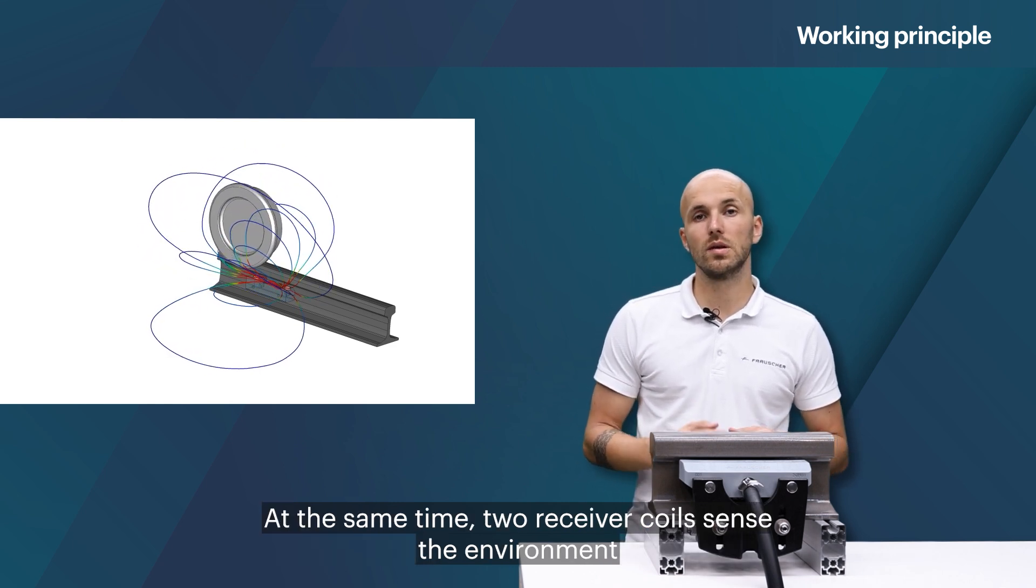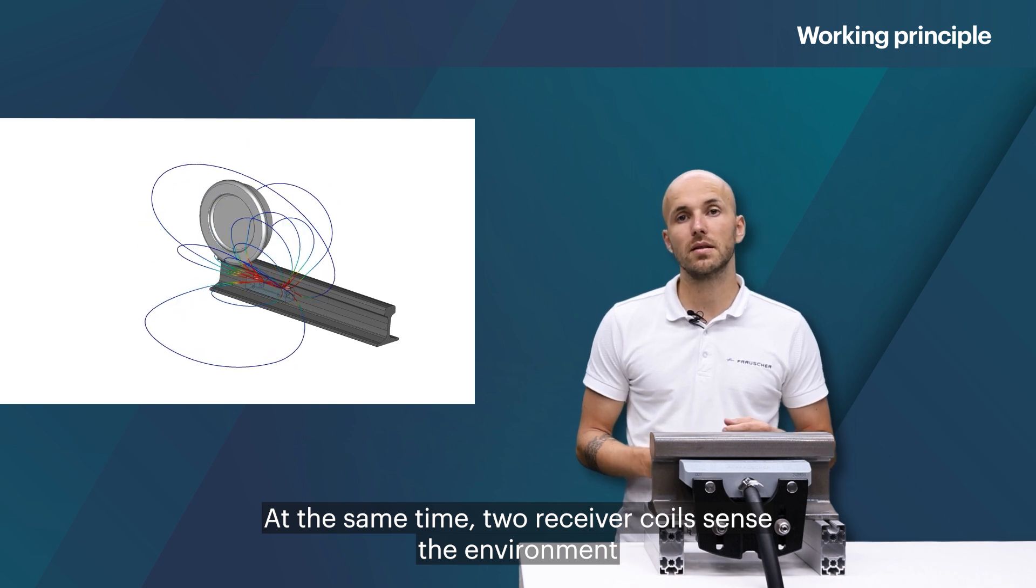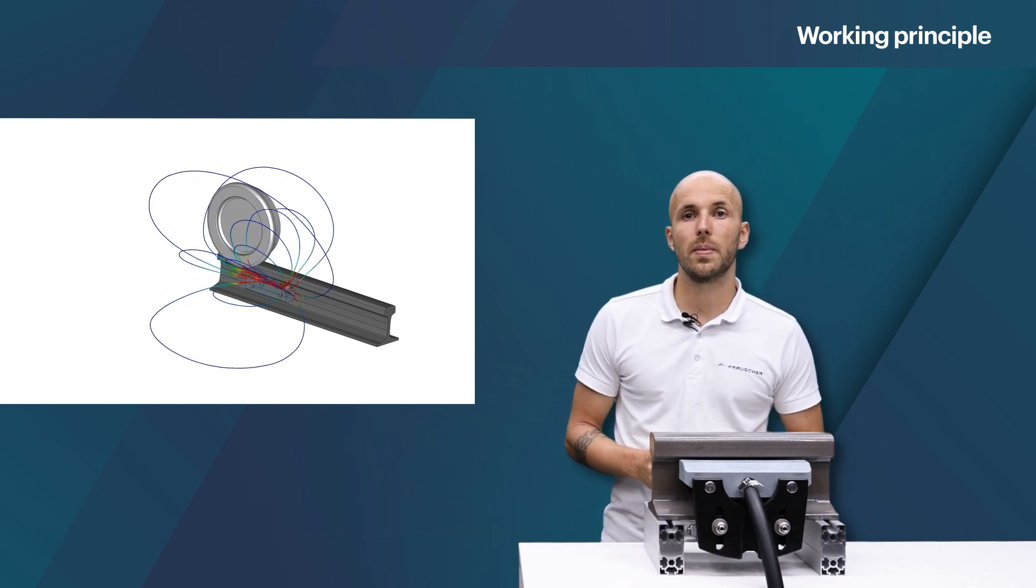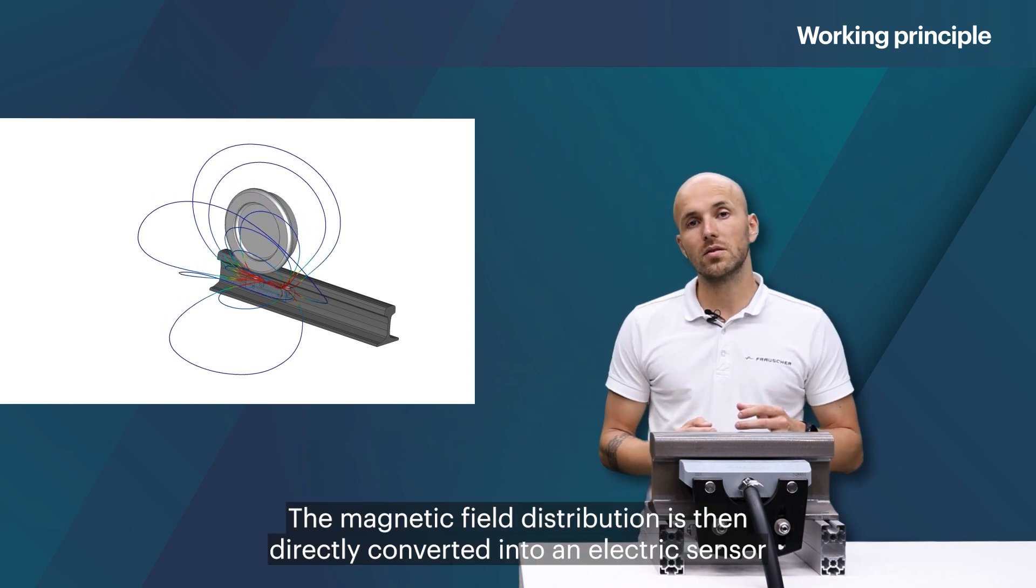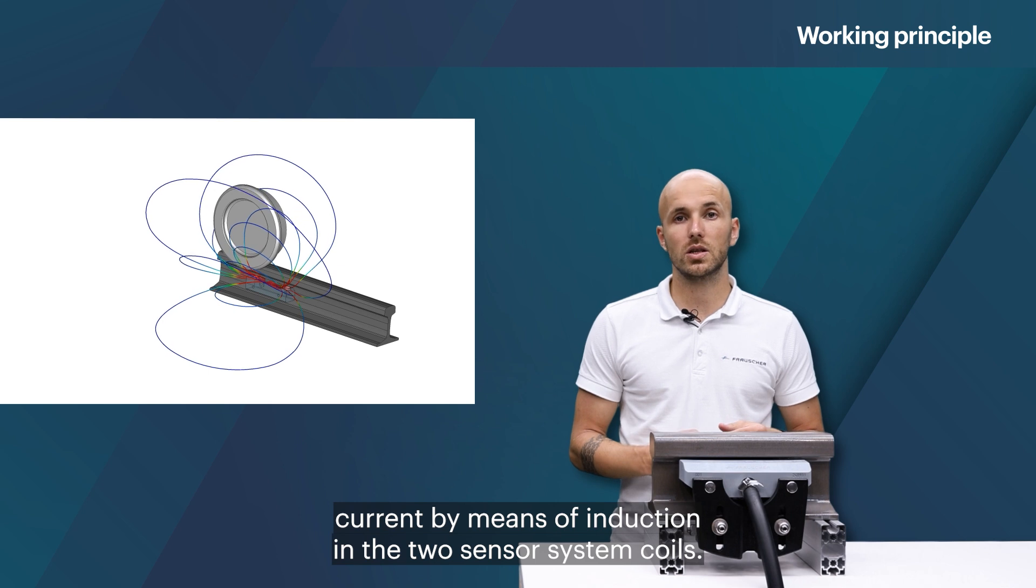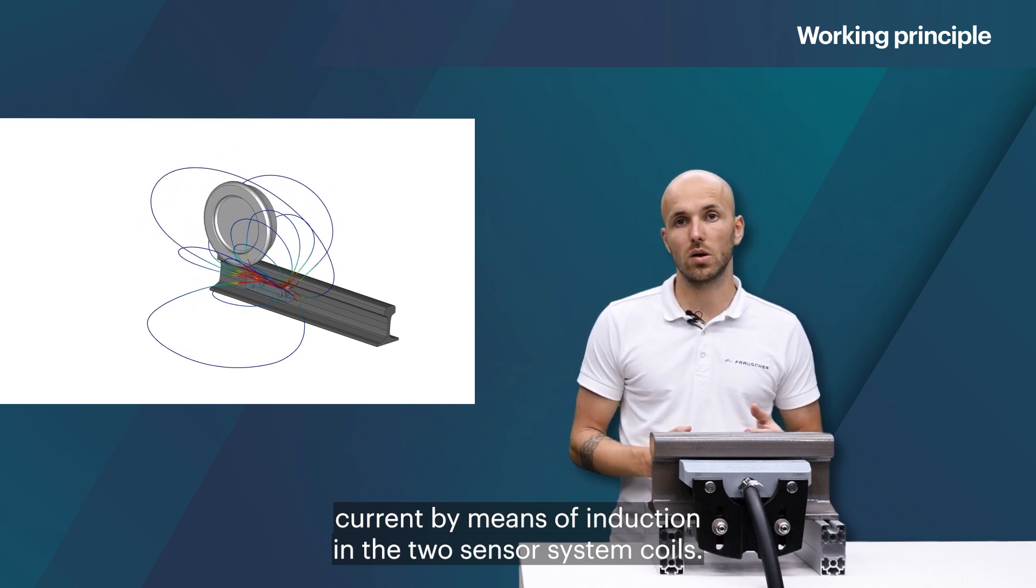At the same time, two receiver coils sense the environment and detect any deviation of the normal state. The magnetic field distribution is then directly converted into electric sensor current by means of induction in the two sensor system coils.